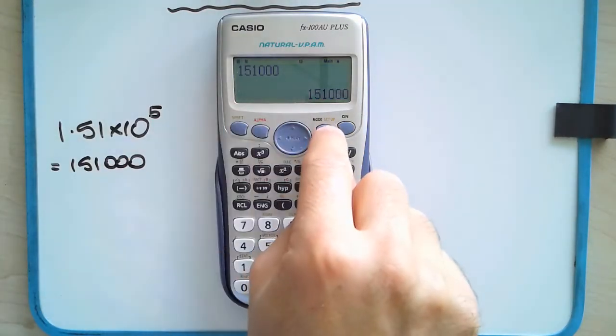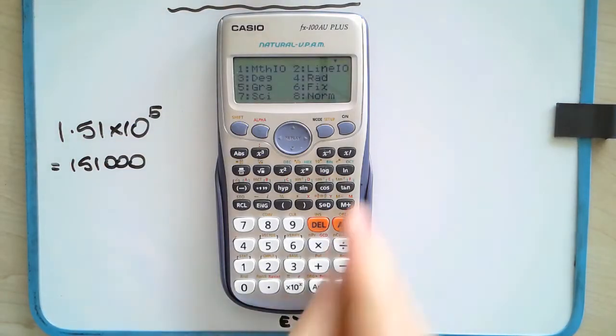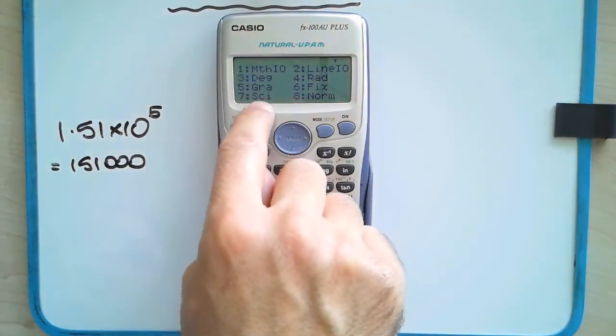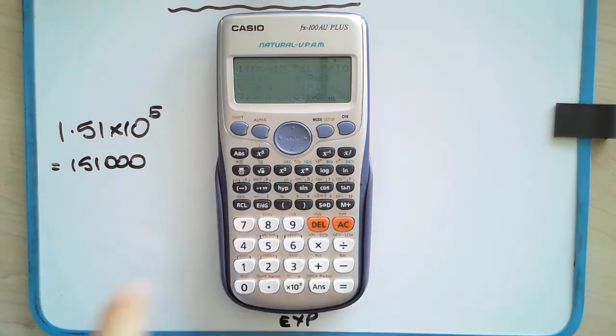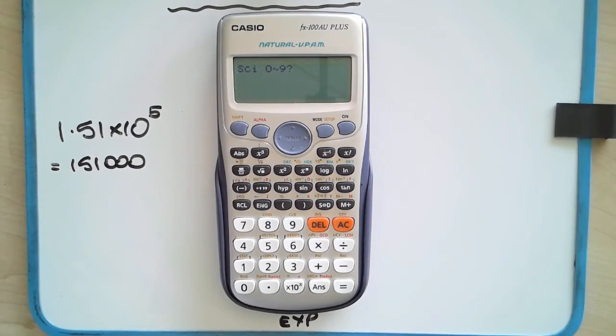If you do press shift setup, you can see a bunch of options there. You'll see number seven here. It could be another number on your calculator, but it should say SCI, which means scientific notation.